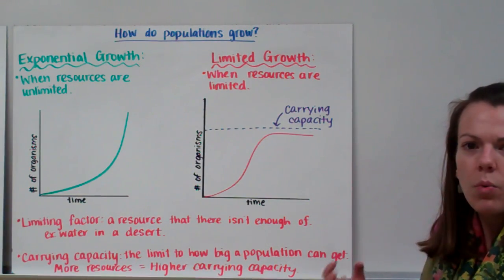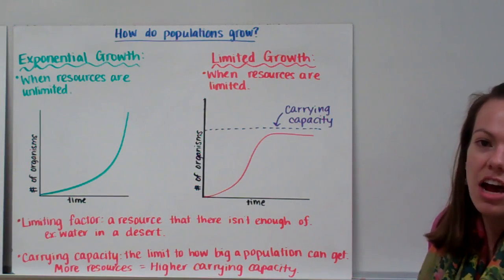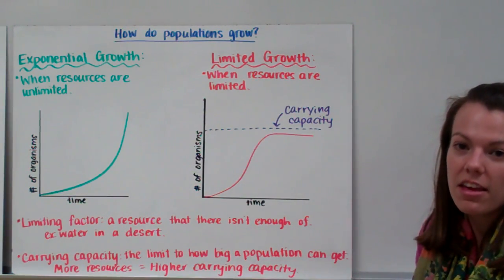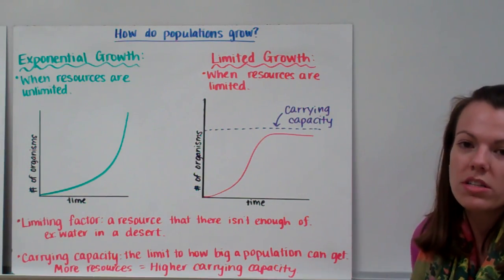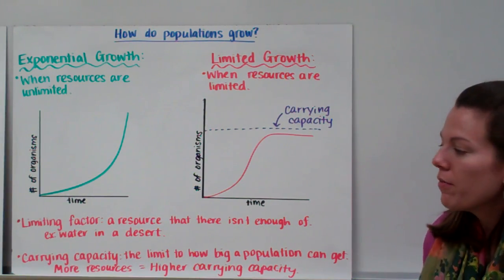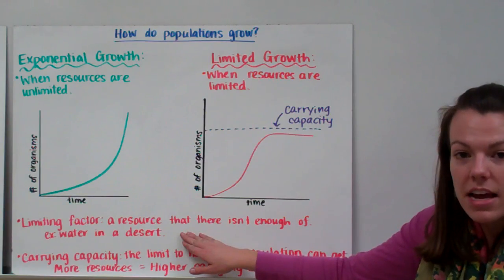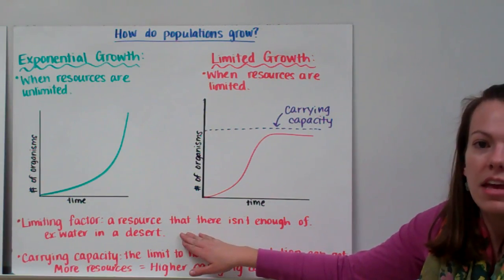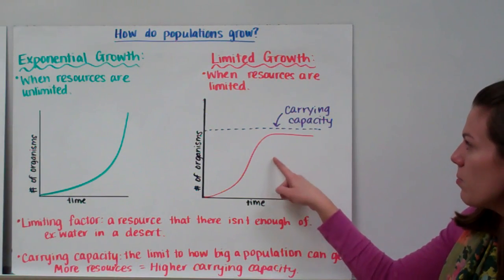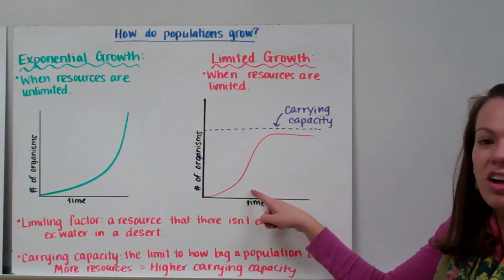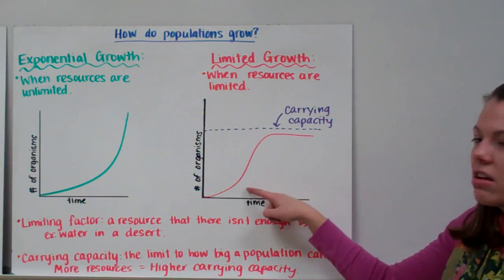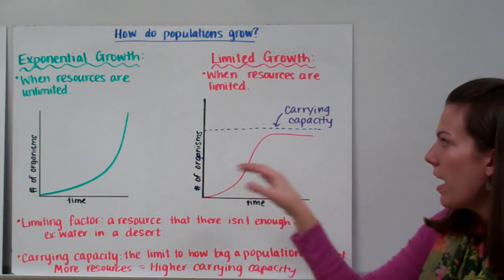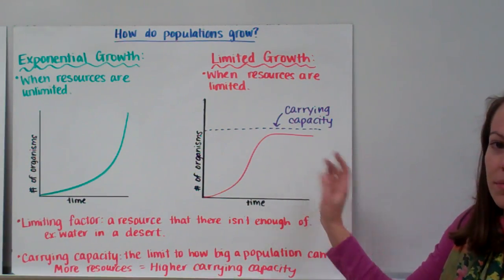Whatever resource there's not enough of is called a limiting factor — any resource in short supply. For example, in a desert the limiting resource would be water. We call this limited growth, and we sometimes call it an S-curve because it looks like the letter S. To summarize: unlimited growth is a J-curve, and limited growth is an S-curve.